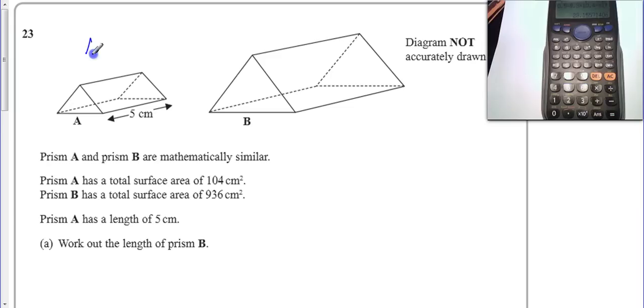We know the area of this one is 104 cm² and we know that the area of B is 936 cm².